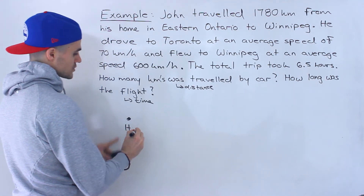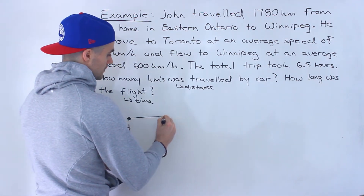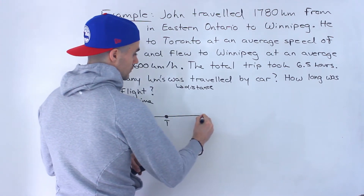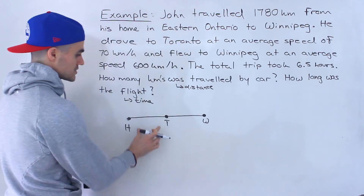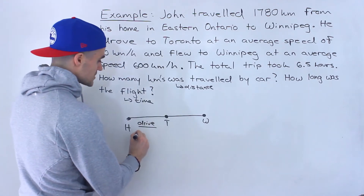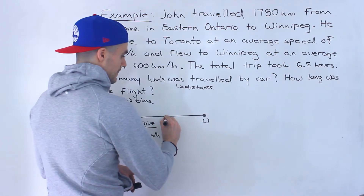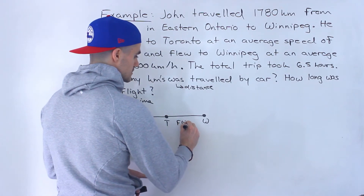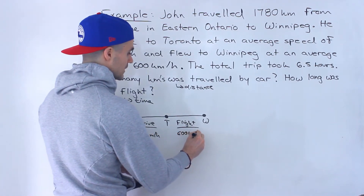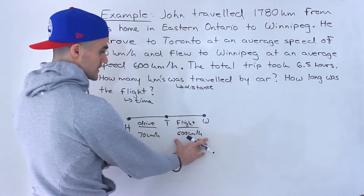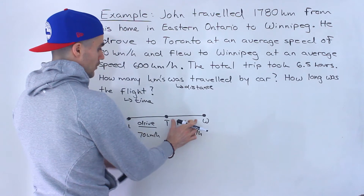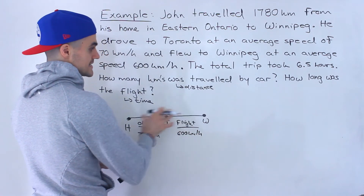To show what's going on, let's say this is John's home. A portion of the trip he drove by car to Toronto, and then from Toronto he flew to Winnipeg. For the drive, the average speed was 70 kilometers per hour, and then from Toronto to Winnipeg the average speed of the flight was 600 kilometers per hour. So we're given the average speeds for both parts of the trip — the part where he drove and the part where he flew.